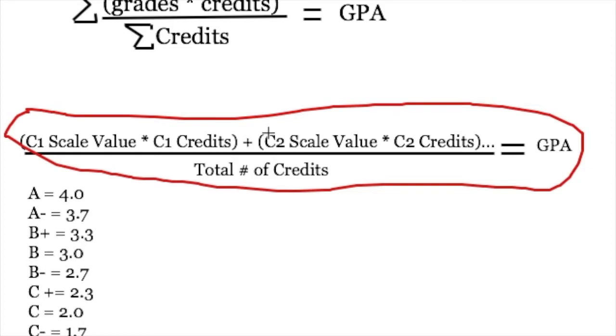Then you add that to the course two scale value multiplied by the number of credits in course two. And then I put this little ellipsis here because you would just keep going. So if there's a third course here, you do the same thing. You take the third course, your scale value for the grade, multiply that by the number of credits for that course, that goes in parentheses, and then that's going to get added on. And then you would just keep adding on and so forth until you've entered in all of the classes for either that semester or all the classes. If you're doing your cumulative GPA, you just keep going and going and going.